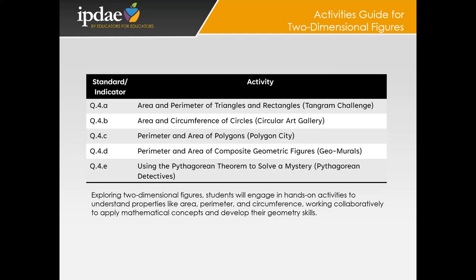We have designed an activities guide to engage students in the exploration of two-dimensional figures and their properties. These hands-on activities will guide students as they grasp and apply essential mathematical concepts such as area, perimeter, circumference, and the Pythagorean theorem. Focusing on a variety of shapes like triangles, rectangles, circles, polygons, and composite figures, students will have the opportunity to work in pairs or small groups. This collaborative environment will encourage them to measure, calculate, and problem solve together, promoting teamwork and communication skills.